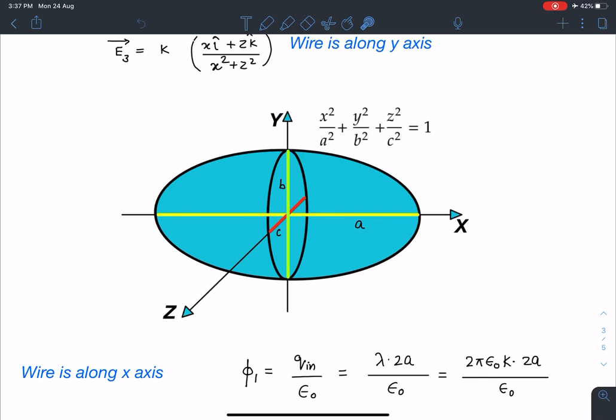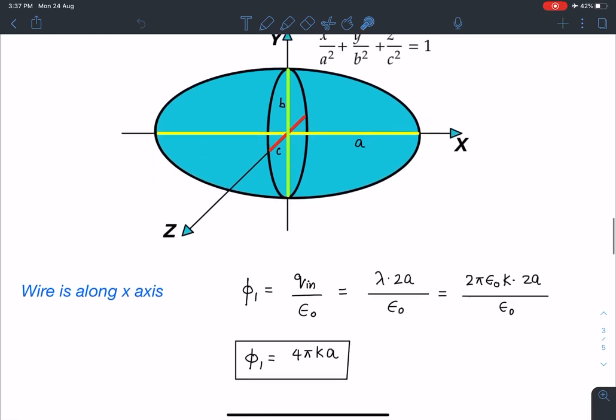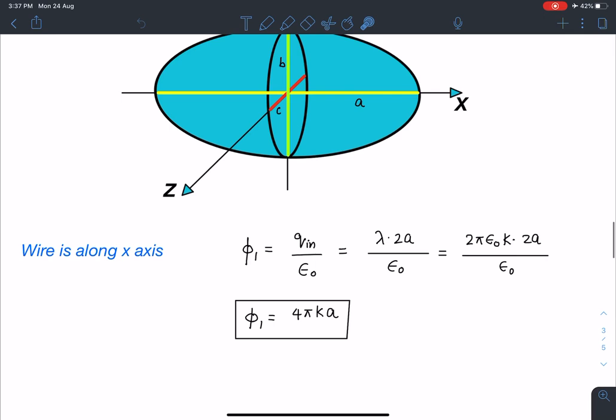So simply I can say flux is charge inside by epsilon 0. So for the wire placed along x axis I can write this much length of the wire is going to be inside the surface, remaining will be outside. So this length is 2a. So flux value is charge inside by epsilon 0. So I can write it as lambda multiplied by the length of it which is inside the surface, which is 2a by epsilon 0. So I can substitute the value of lambda now which is 2 pi epsilon 0 k I have derived earlier.